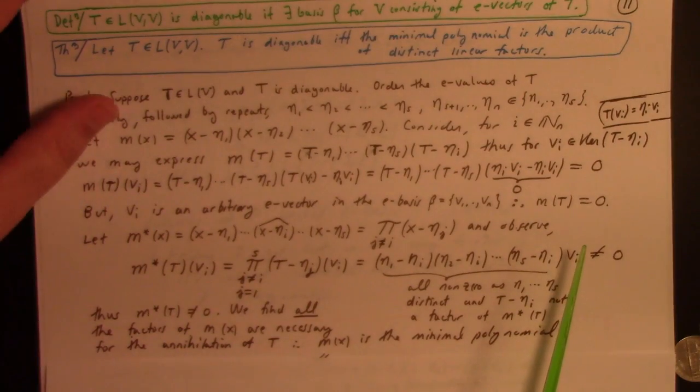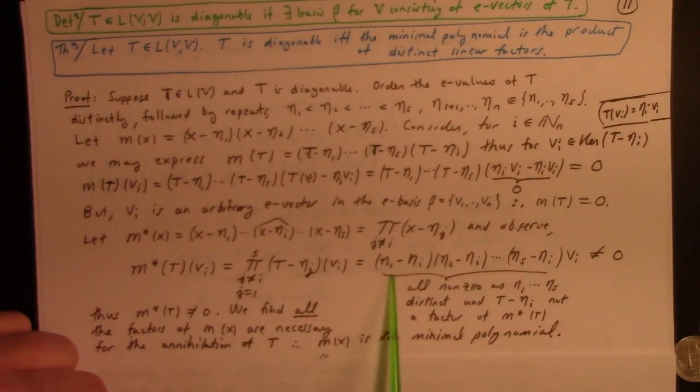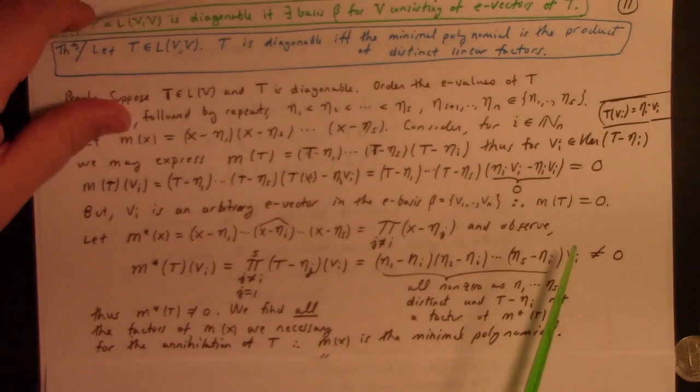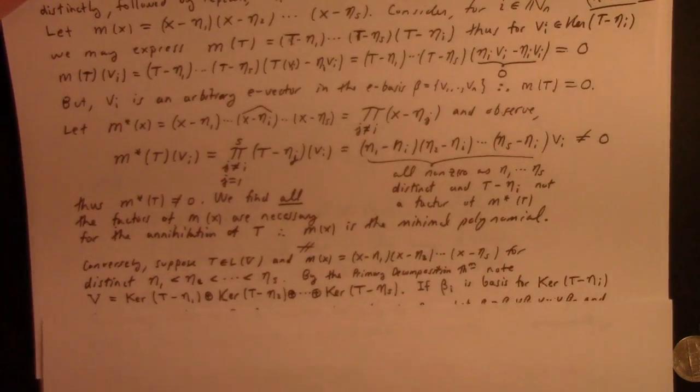For m of x, all the factors in m of x are necessary for the annihilation of t. Therefore, m of x is the minimal polynomial. Man, this calculation is just almost spot on the thing I did to prove the linear independence of distinct eigenvectors, eigenvectors with distinct eigenvalues, right? This is almost that calculation exactly. Anyway, just saying.